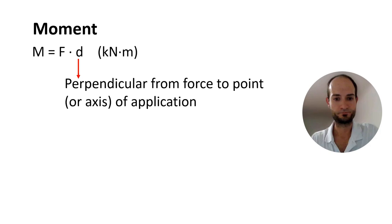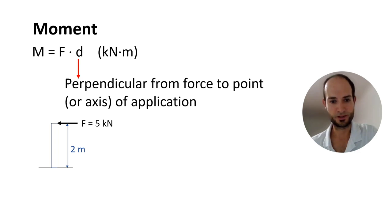For example, imagine you have a 2 meter wall with a 5 kN point load at the top. What's going to be the moment at the base of the wall? We said a moment equals force times distance. So, we have moment equals the force, 5 kN, times the distance, in this case 2 meters to the base of the wall. And that's 10 kN per meter.